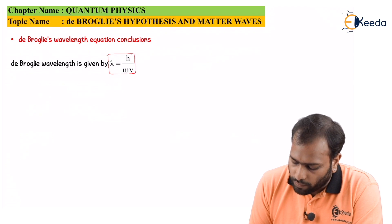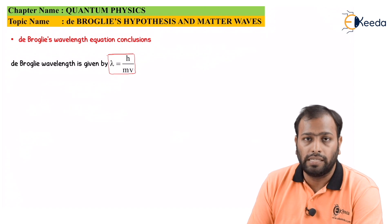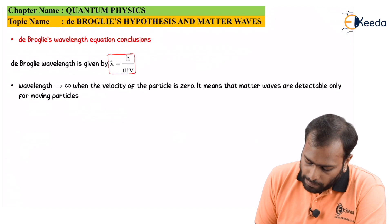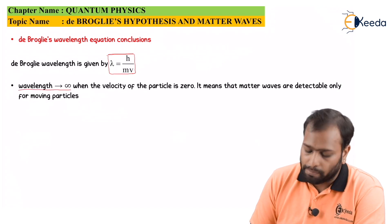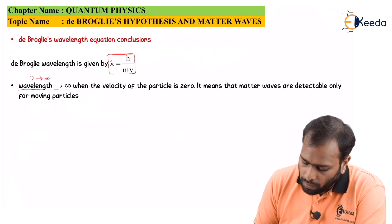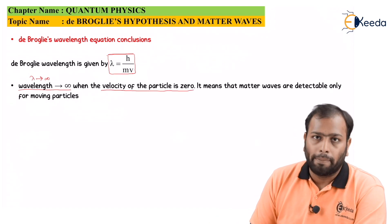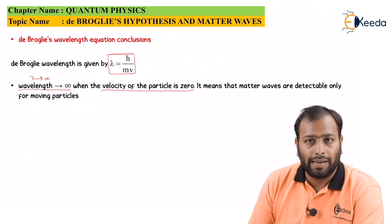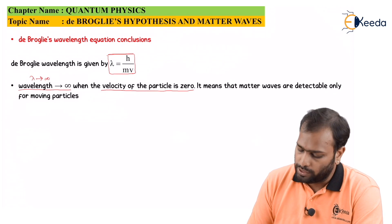De Broglie's wavelength is given by λ = h/mv. I am not taking it for light — I am taking it for real world objects and hence I have replaced c with v. The first conclusion: as wavelength tends to infinity, meaning λ equals infinity, this can only happen when the velocity of the particle is zero. Since mass can never be zero, the only possibility of λ = ∞ is v = 0.